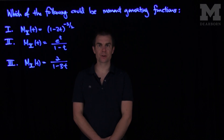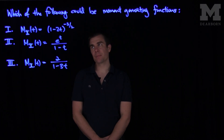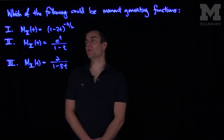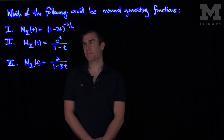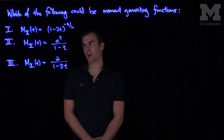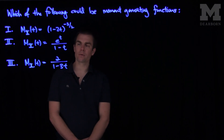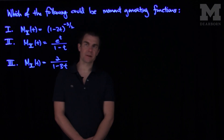Hello students, in this video we'll see the solution to the third problem on the quiz. In this problem, we're asked which of the following functions could be moment generating functions. The first function is m_x(t) = (1 − 2t)^(−3/2). The next is e^t over (1 − t). And the third potential moment generating function is 2 over (1 − 3t).